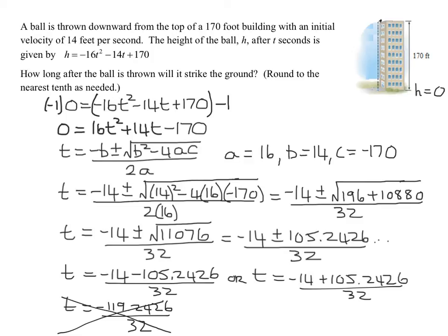So all I'm going to do now is work on this solution. I got negative 14 plus 105 was 91.2426 over 32, which was 2.851. And then if I round that to the nearest tenth, the 5 is going to round that one up. So my answer is 2.9 seconds. So when does this strike the ground? It strikes the ground at 2.9 seconds rounded to the nearest tenth.